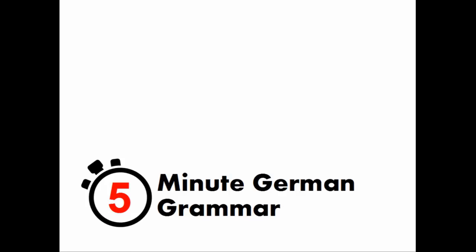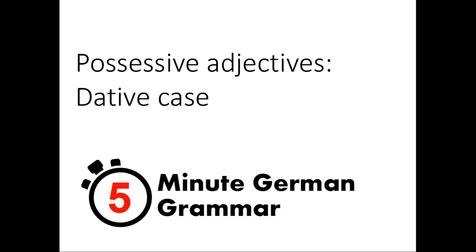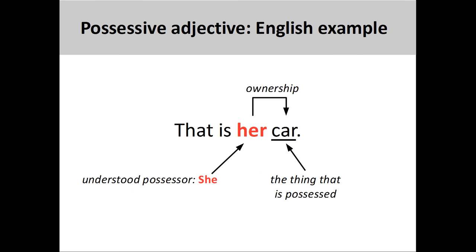Welcome to 5-Minute German Grammar. This presentation will introduce possessive adjectives in the dative case. In an earlier presentation, we saw that possessive adjectives show ownership of something or a relationship between things. We saw that these adjectives must be placed before the thing that is possessed — for example, 'her' comes before 'car,' indicating ownership of the vehicle. You may want to review that presentation before continuing with this one.